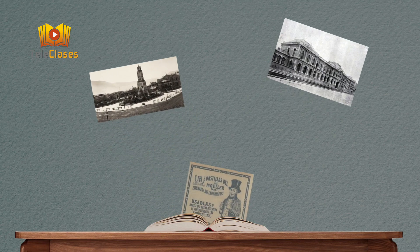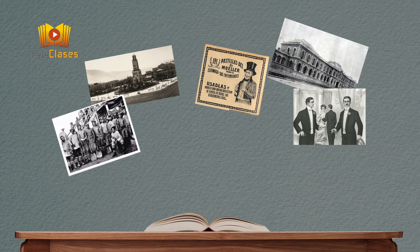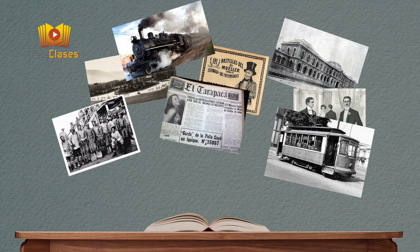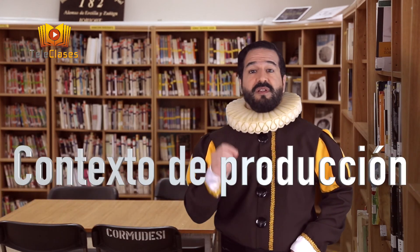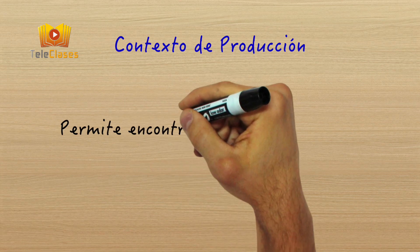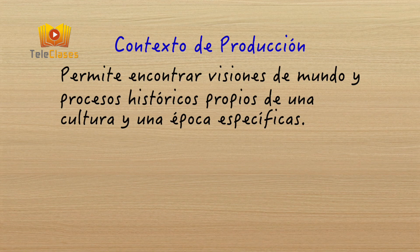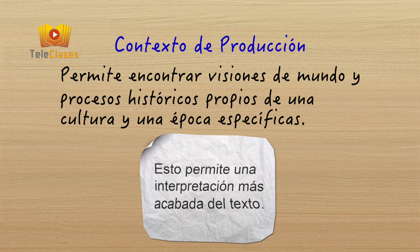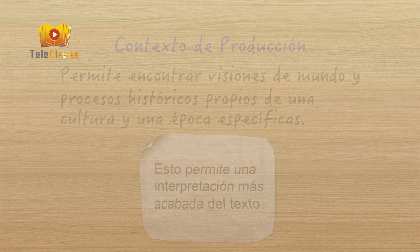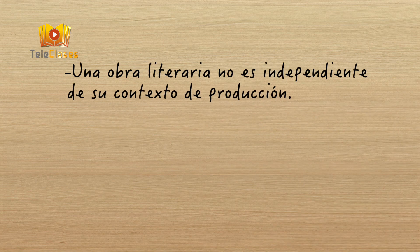Cuando analizamos un texto narrativo, debemos considerar también que las obras literarias han sido creadas en un determinado momento histórico y en una sociedad específica, y estos aspectos se pueden descubrir en el texto. Por ejemplo, si lees una obra de principios del siglo XX, probablemente no encontrarás allí televisores o computadores, pero sí puedes hallar tranvías, trenes o periódicos, pues son elementos propios de ese momento histórico. Al momento histórico-cultural en que se sitúa una obra lo denominamos contexto de producción. La importancia del contexto está en la posibilidad de encontrar en la literatura visiones de mundo y procesos históricos propios de una cultura y una época específicas. Conocer esta información puede resultar un aporte para una interpretación más acabada del texto. Recordad: una obra literaria no es independiente de su contexto de producción.